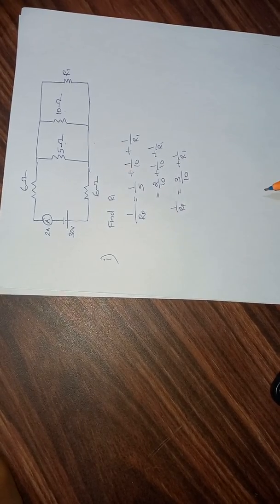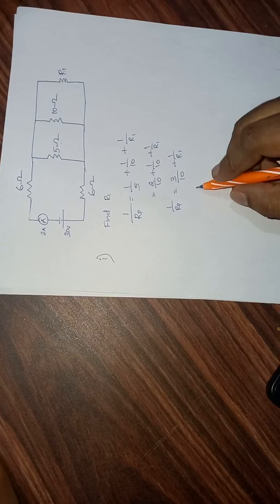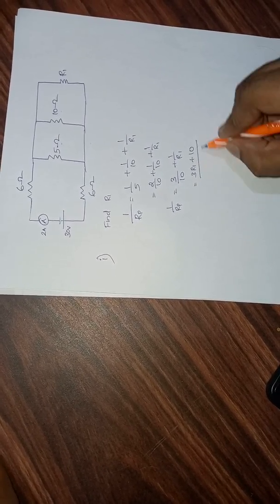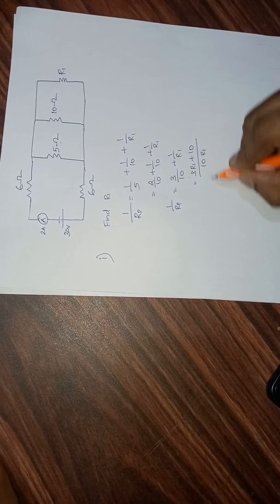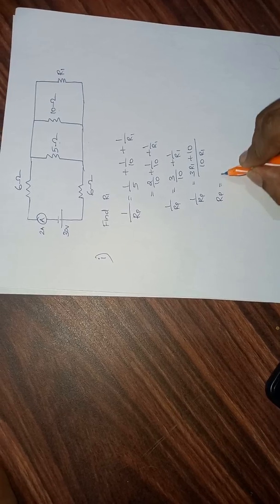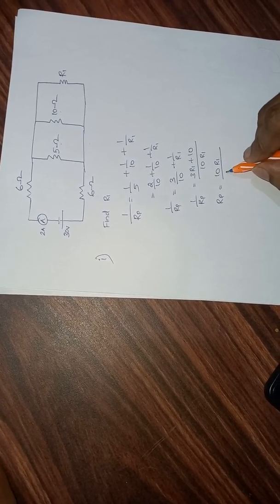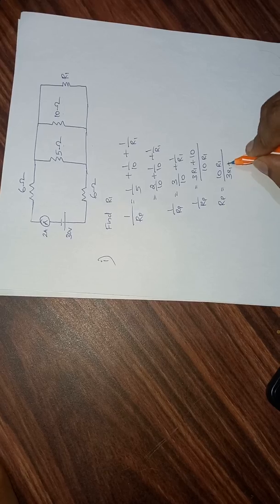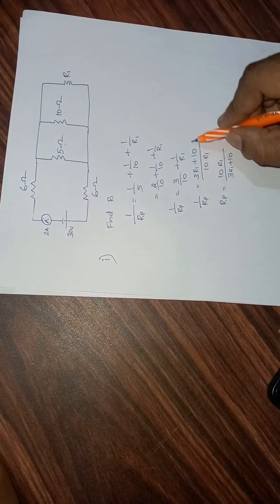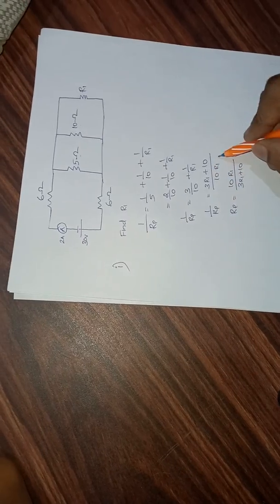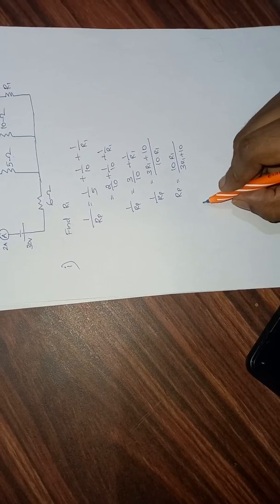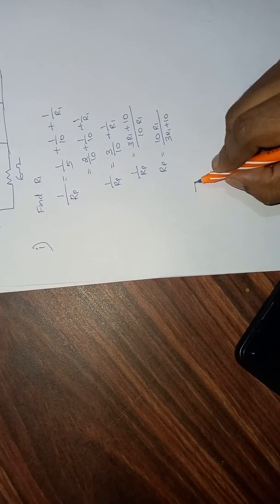This simplifies to 1/Rp = 3/10 + 1/R1, which gives us (3R1 + 10) / (10R1). Taking the reciprocal, Rp = 10R1 / (3R1 + 10). That is our expression for the equivalent parallel resistance.